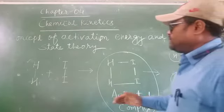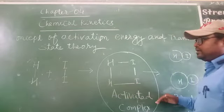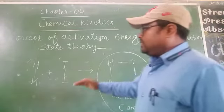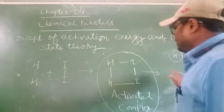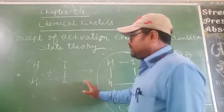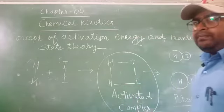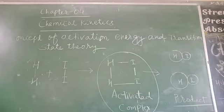This is the concept of activation energy and transition state theory. That means how reactant will convert into product. First of all, this reaction has to pass through the activated complex. And there are so many examples which are related with these types of reaction.